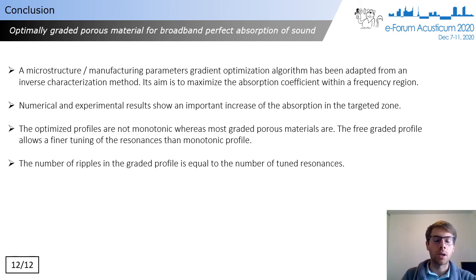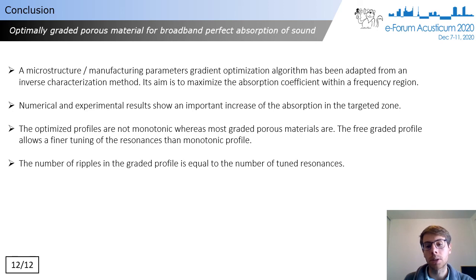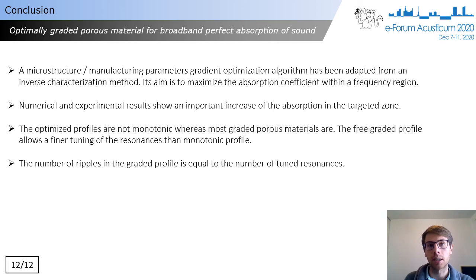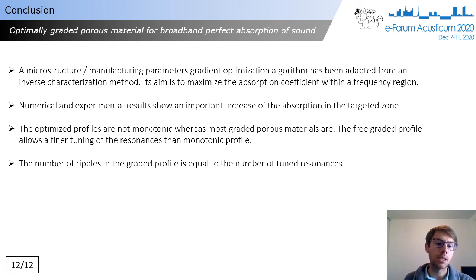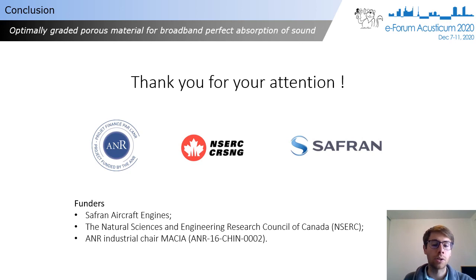To conclude, a microstructure and manufacturing parameter gradient optimization algorithm has been adapted from an inverse characterization method, with the aim of maximizing the absorption coefficient within a targeted frequency region. Numerical and experimental results showed an important increase of absorption coefficient in the targeted zone, and even quasi-perfect absorption in the targeted frequency range. The optimized profiles are not monotonic — unlike most graded porous materials such as trapezoidal forms in anechoic rooms. The freely graded profiles allow finer tuning of resonances than monotonic profiles, and the number of ripples in the graded profile equals the number of tuned resonances of the porous slab.